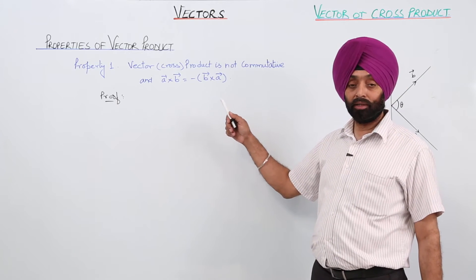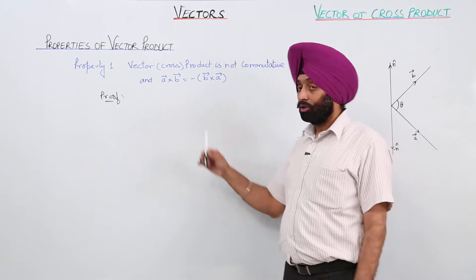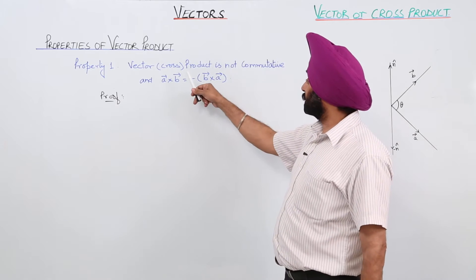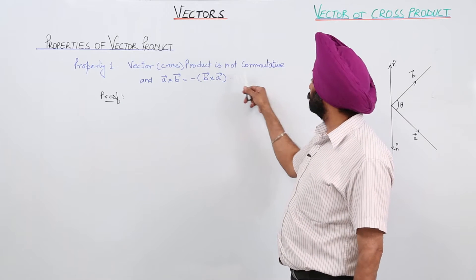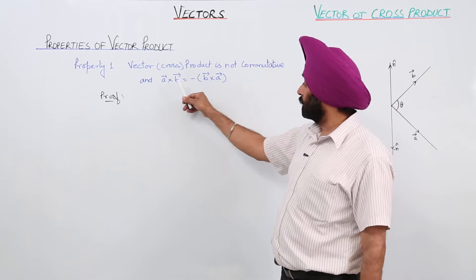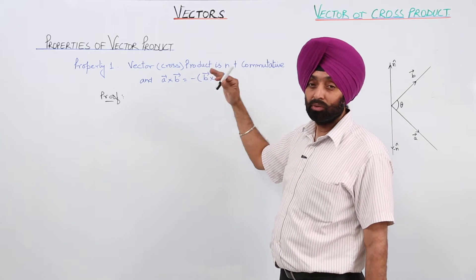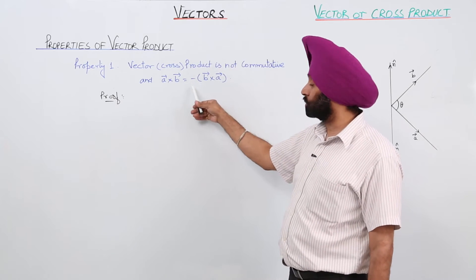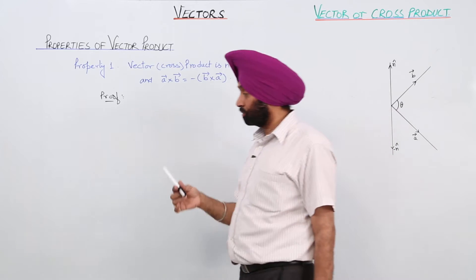Properties of vector cross product. Property number 1 is: vector product, or vector cross product, is not commutative. It means A×B is not equal to B×A. Rather, A×B is equal to negative of B×A.